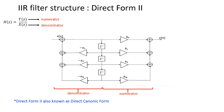For Direct Form II, the structure is similar to Direct Form I, except that the delays are combined — numerator and denominator share the same delay. That is why Direct Form II is also known as the direct canonical form.